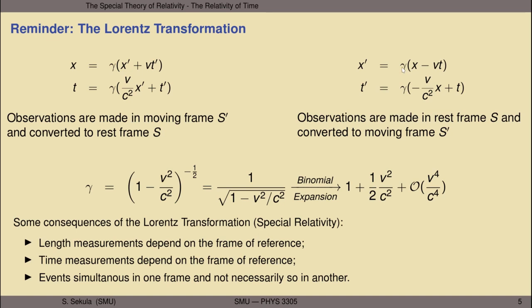The gamma function that appears in all of these equations depends on the relative speed between the two frames, v, and has the form 1 over the square root of 1 minus v-squared over c-squared, where c is the speed of light. This can be expanded into a series using the binomial expansion: one plus one-half v-squared over c-squared plus higher-order terms in v. For sufficiently low velocities—less than a few percent of the speed of light—we can neglect those higher-order terms.